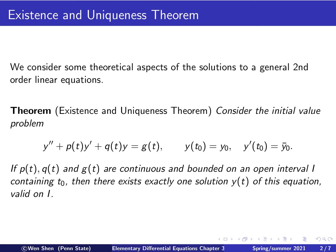For this initial value problem, we have existence and uniqueness of solution under the following criteria. The functions p, q, and g, which occur as coefficients, are continuous and bounded on an open interval I. This open interval I should contain the initial time t0. If that is the case, then there exists one solution, and the solution is unique. The solution is valid only on this interval I.